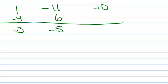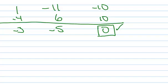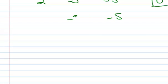Negative 2 times negative 5 is positive 10. When I add them up, I get 0. I expected to get 0 because I was told that negative 2 is a factor. So what I'm left with now is 2x squared minus 3x minus 5. This is my resulting polynomial.